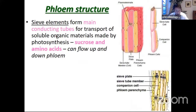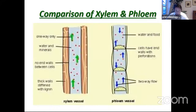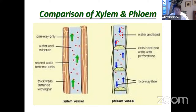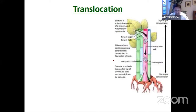Sieve elements are the main conducting tubes, transporting products of photosynthesis — sucrose and amino acids — both up and down the plant. Remember: xylem is the one-way flow of water and minerals from roots to shoots, while phloem is the two-way transport of sugars and amino acid products of photosynthesis around the plant. Now, translocation.